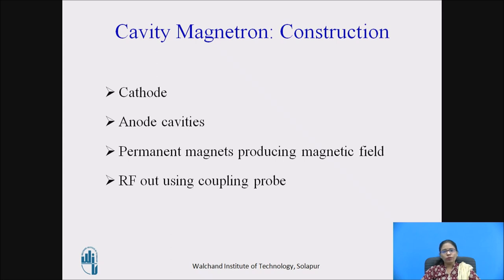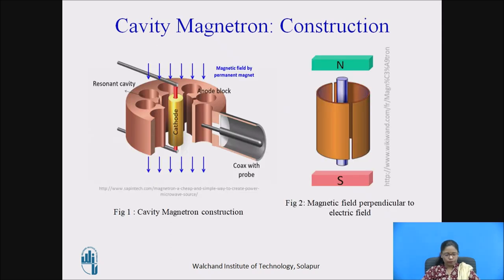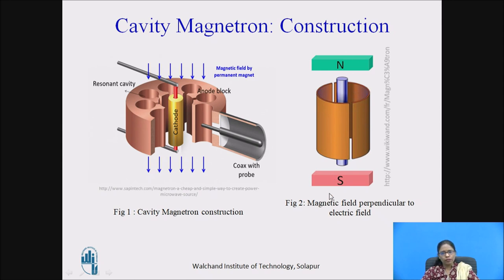Construction: the components are the cathode, anode cavities, permanent magnets producing magnetic field, and RF output using a coupling probe. As you can see here, this is a cavity magnetron — there is a cathode at the center, and surrounding it are the anode cavities, which are the circular cavities around it. This is the RF output coaxial cable with which we take the output. The magnetic field is perpendicular to the direction of the electric field, which is why it is called a cross-field tube.